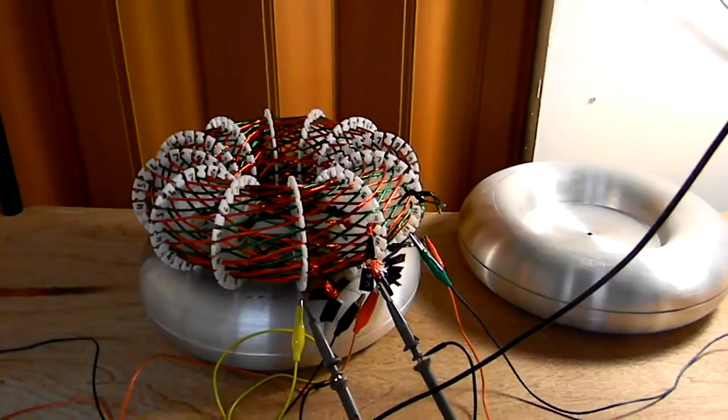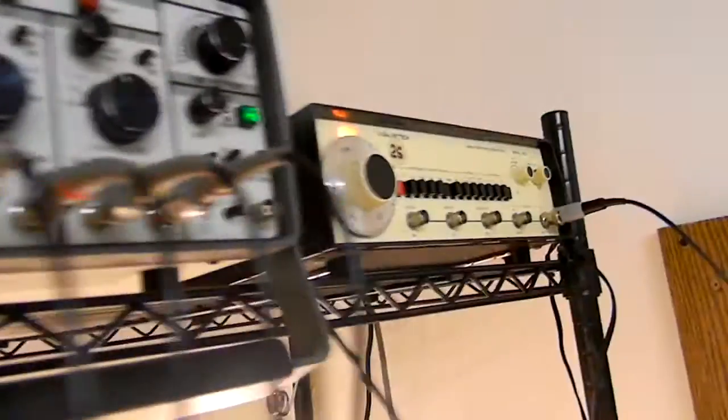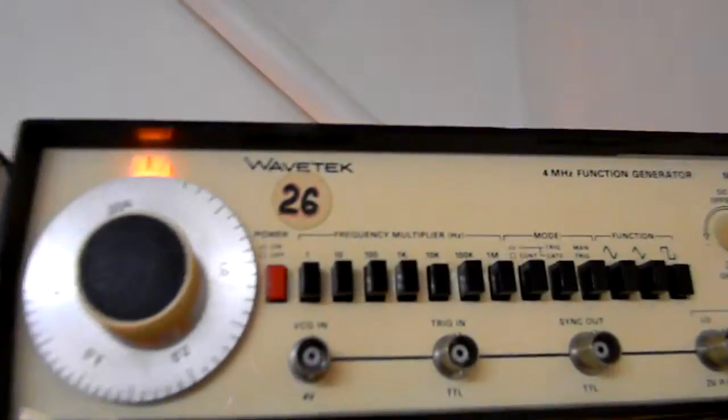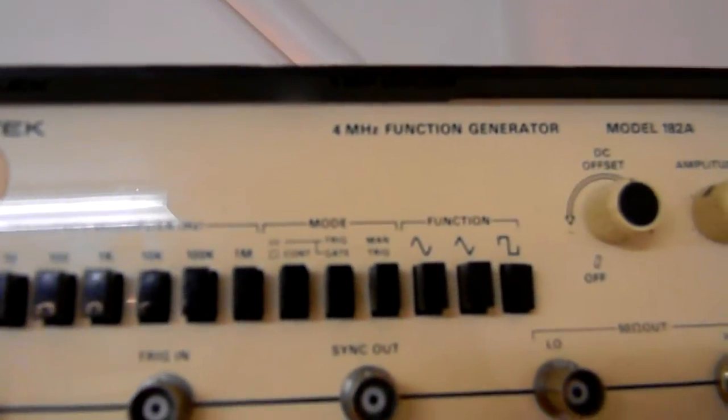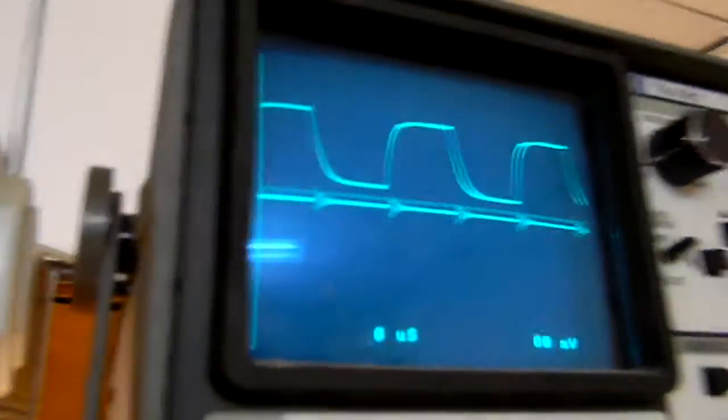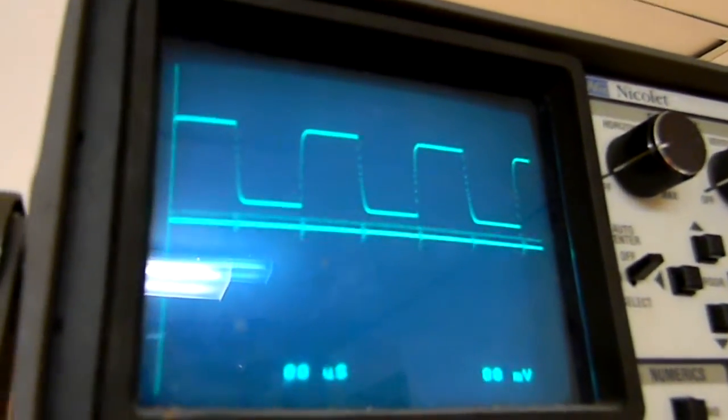What we're going to do is test the resonance and find resonant peaks with an oscilloscope hooked up and our signal generator. Our signal generator is set to 10k multiplier and the function is a square wave.